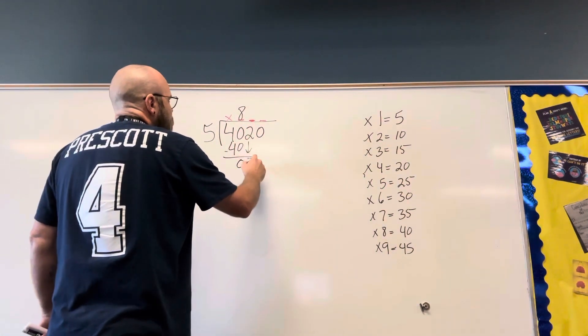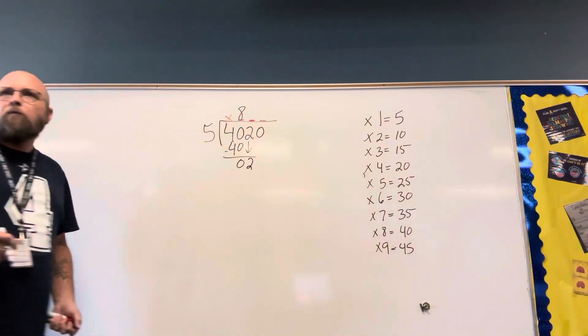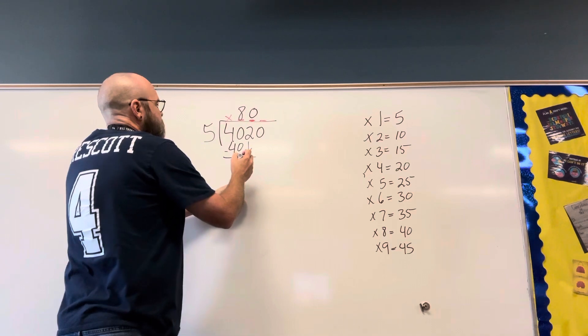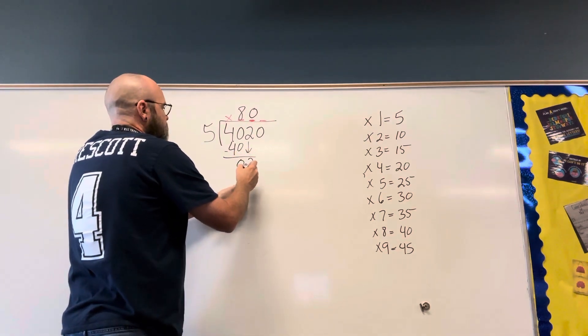I bring down, I have a 2 here. I have to have a number in my tens place. 5 doesn't go into 2, so my number in my tens place is going to be 0.